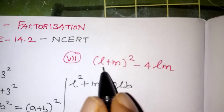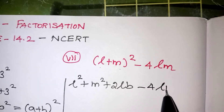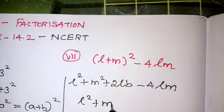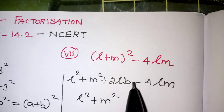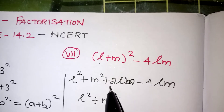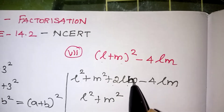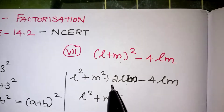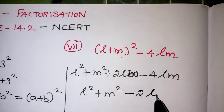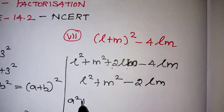So expanding gives us l squared plus m squared plus 2lm, minus 4lm. Now l squared and m squared are unlike terms so we can't combine them. But 2lm and -4lm are like terms — adding them gives minus 2lm.